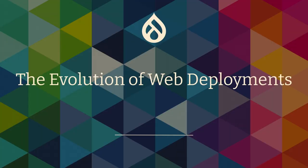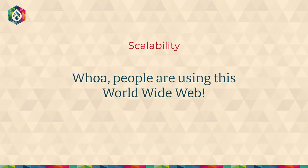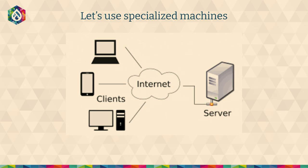So let's talk about the evolution of web deployments. Early on, people were shocked when they realized, hey, people are really using this worldwide web. We need to do something about the amount of traffic we're getting. Early on, we started using specialized machines. I was just talking to somebody who was working at a university and they still had some old machines sitting under a professor's desk that they were using to run websites. But very quickly we moved on to specialized servers.